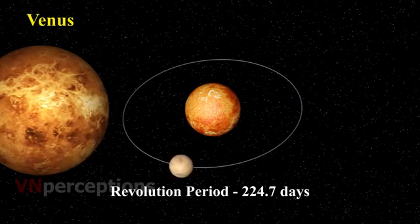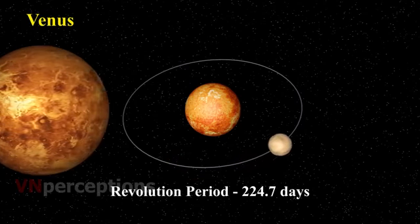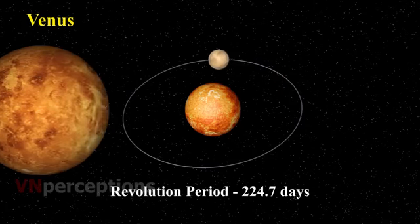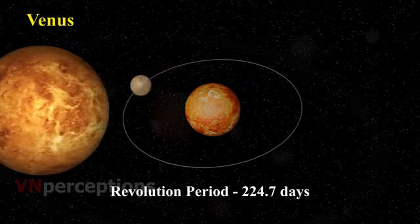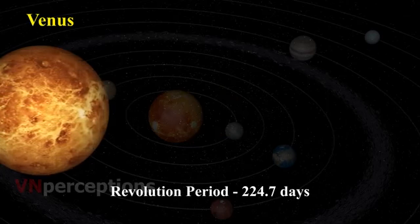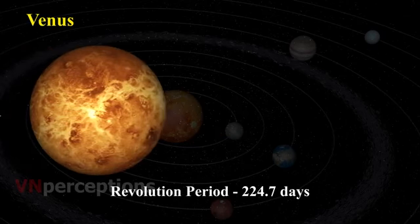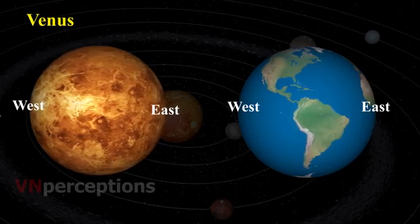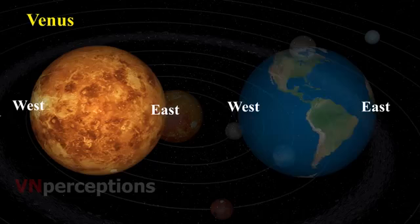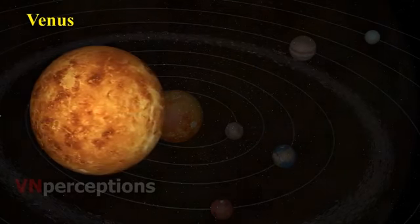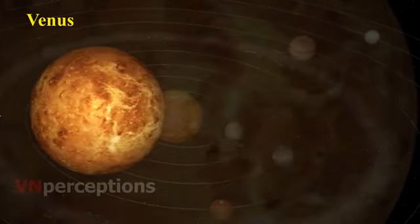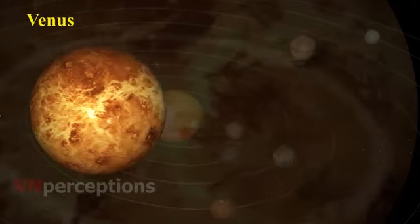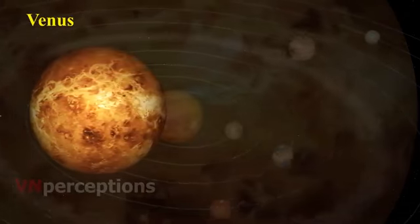Therefore, it is often called a morning or an evening star, although it is not a star. Venus has no moon or satellite of its own. The rotation of Venus on its axis is somewhat unusual. It rotates from east to west, while the Earth rotates from west to east. Venus isn't the closest planet to the sun, yet it is still the hottest. The reason is that it has a thick atmosphere full of the greenhouse gas carbon dioxide and clouds.